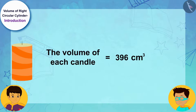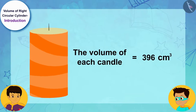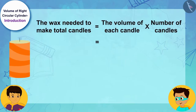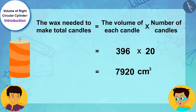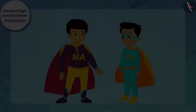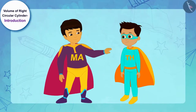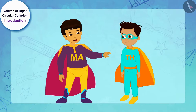This means I would need 396 cubic centimeters of wax to make each candle. I want to make 20 such candles, so I will need 396 times 20, that is 7920 cubic centimeters of wax. Let us go to the market and buy wax, then we will make candles together.